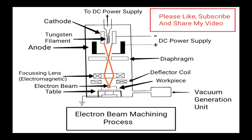The electrons pass through an aperture in the form of a controlled beam without colliding. A potential difference of 50 to 150 volts is maintained between the cathode and anode, accelerating the electrons to achieve a velocity of around two-thirds the speed of light. This high-velocity electron stream, after leaving the anode, passes through a tungsten diaphragm and then through the focusing lens.